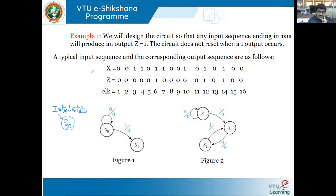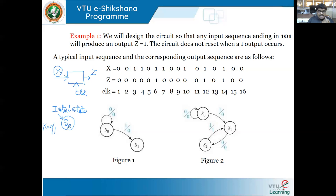As we have seen in the block diagram, there is input x and it generates output z. Depending upon the application of the clock, the moment clock is applied, depending upon x I will generate z. If I am in any state, I check what the corresponding input is. In this case it is one variable, one bit. If I am in initial state S-naught, x may be either zero or one.